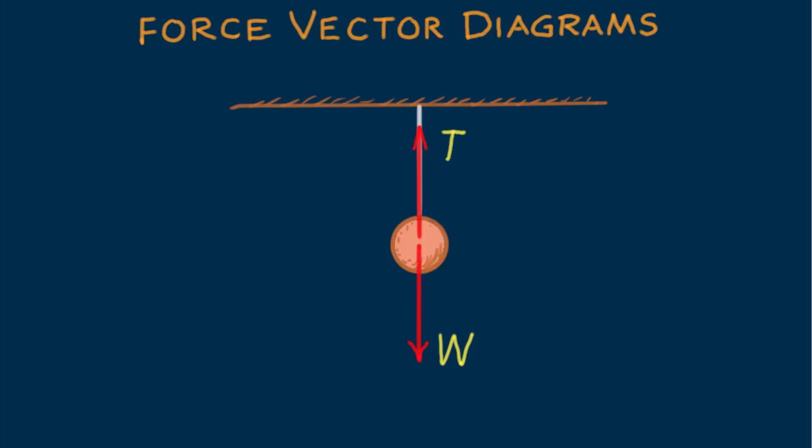We draw the length of the vector as long as the W vector, but in the opposite direction. Both vectors add to zero. We draw the tails of the vectors from the center of the ball, where the dot is.